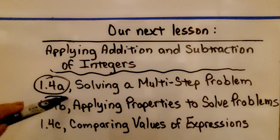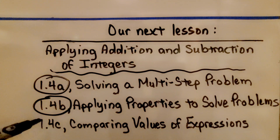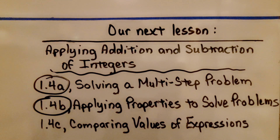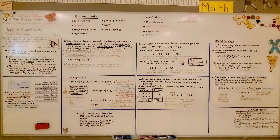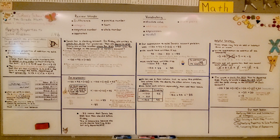We're finished with 1.4b and will move on to 1.4c, where we'll be comparing values of expressions. Remember: the commutative property of addition lets us swap the add-ins' places, and the associative property of addition is the grouping property — we can group them differently and get the same sum. Have a wonderful day!